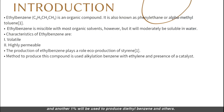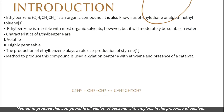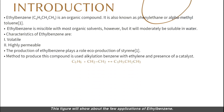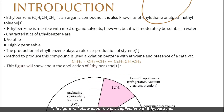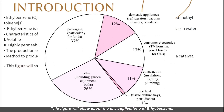Production of ethyl benzene is important because 99% of ethyl benzene is used to produce styrene, and another 1% is used to produce diethyl benzene and others. The method to produce this compound is alkylation of benzene with ethylene in the presence of a catalyst.